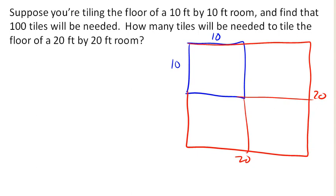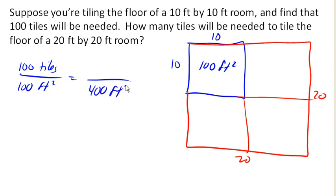In this case, we need 100 tiles for an area of 100 square feet. And so, for an area of 20 by 20 or 400 square feet, I'm going to need 400 tiles, which of course we could solve for if we didn't know that by putting in a variable and then solving for it.